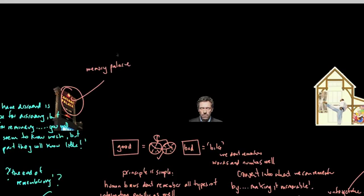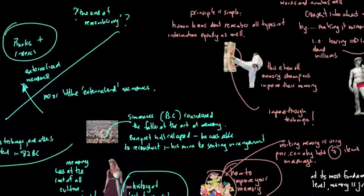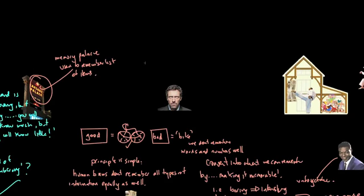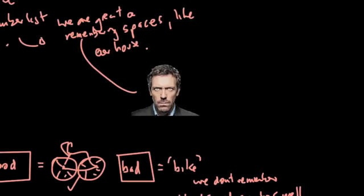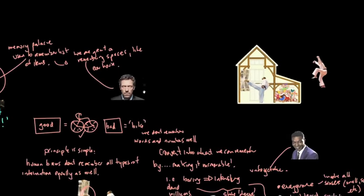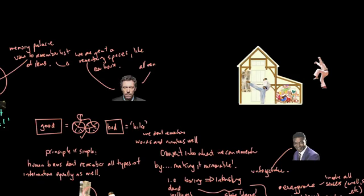The other technique that's used is called the memory palace. And this is really about a technique used to remember a list of items. This goes back to Simonides where he reconstituted in his head what the image was of the banquet hall. It's a pretty simple process. If you need to remember a list of items, you use a house or a location that you know intimately well. You Google house, that's what you get.